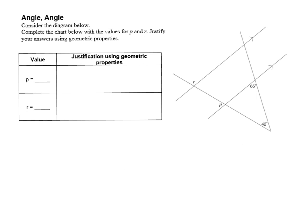To answer this question, I'm going to start, as always, with observing. I can observe I have two parallel lines. I have two transversals, and the transversals meet down at the bottom and form a triangle. So I can first use the properties I know about triangles to solve what this missing angle is. To do that, I would do 180 minus 42 minus 65, and that gives me 73 degrees. So I know this angle is 73 degrees.